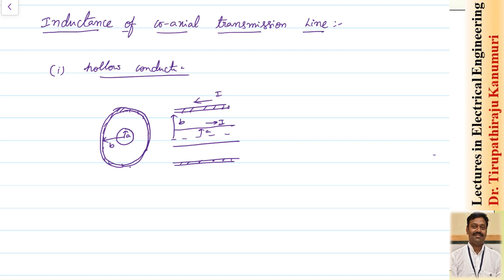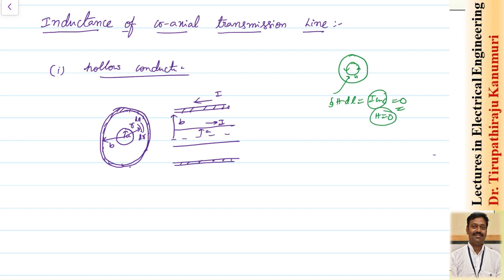If we want to find the flux at a distance R from the center, we take a differential radius dr. Inside the hollow conductor, by Ampere's circuit law, the closed integration of H·dl equals the enclosed current. Since the current is confined to the surface, the enclosed current inside is zero, so H = 0 and the flux inside is zero. Flux linkages inside are therefore zero. Flux exists only for r ≥ A, above the surface of the conductor.